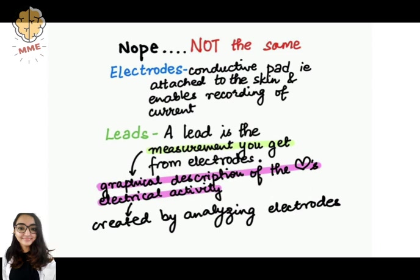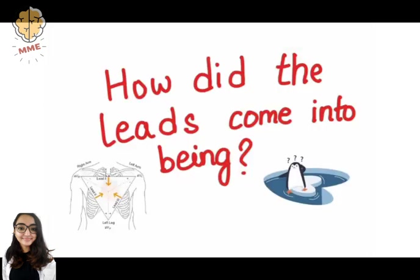In other words, each ECG lead is computed by analyzing the electrical currents detected by several electrodes.